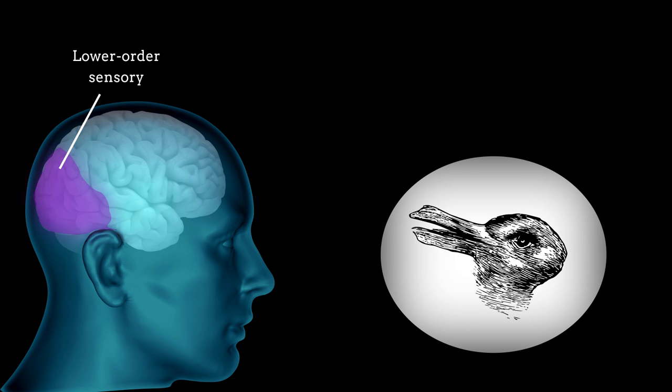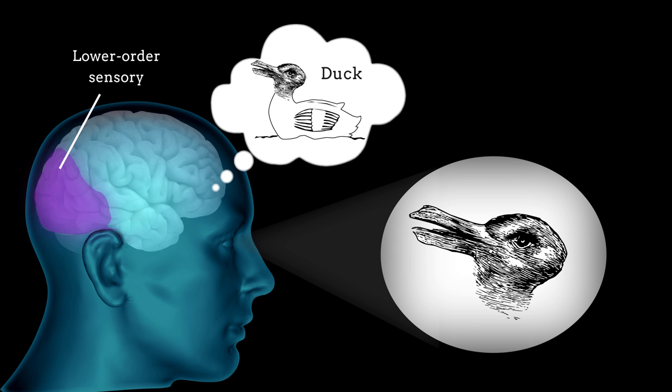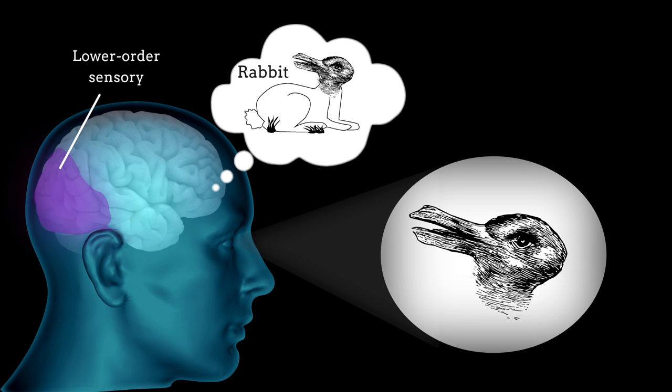These results suggest that lower-order sensory areas of the brain rather than higher-order cognitive areas may be responsible for choosing what we perceive when we view ambiguous images. Future studies will need to more fully determine the role of higher-order brain regions in this process.